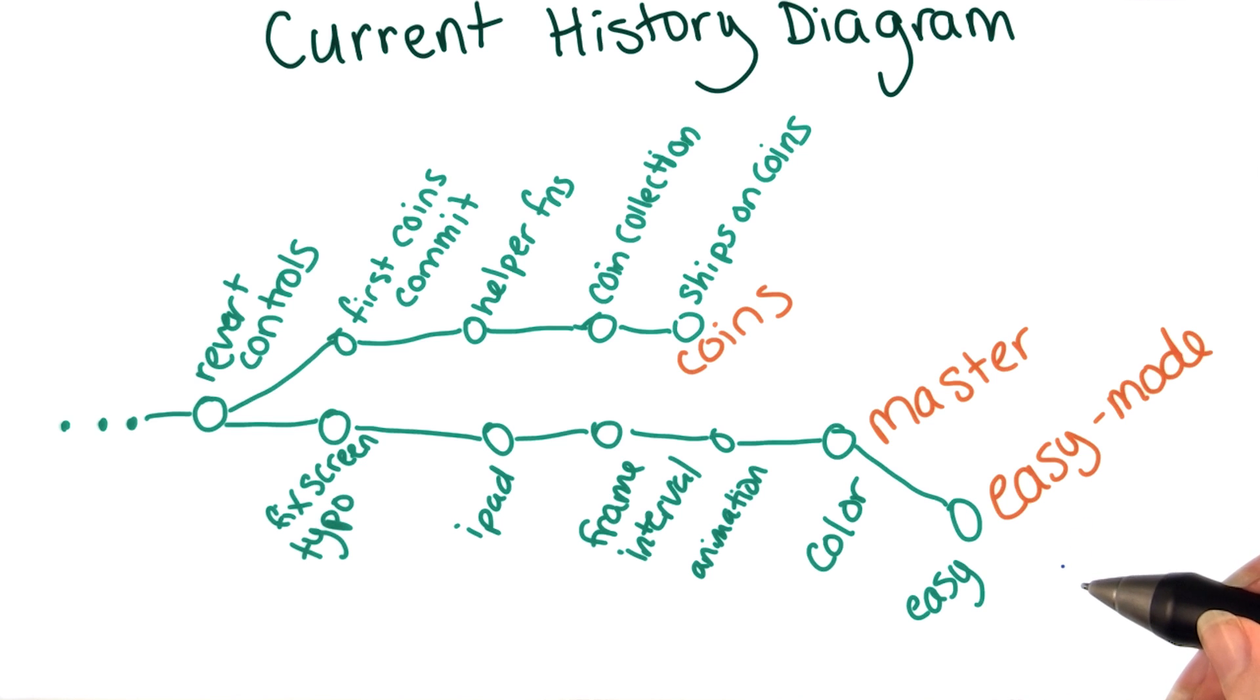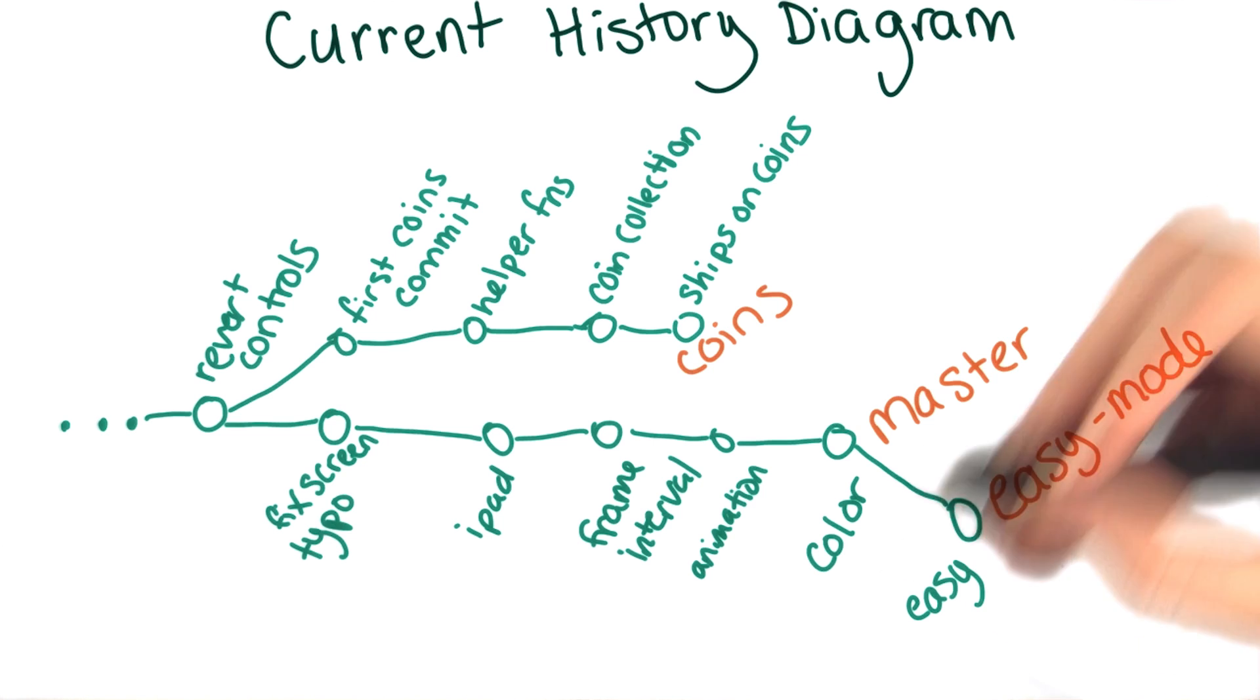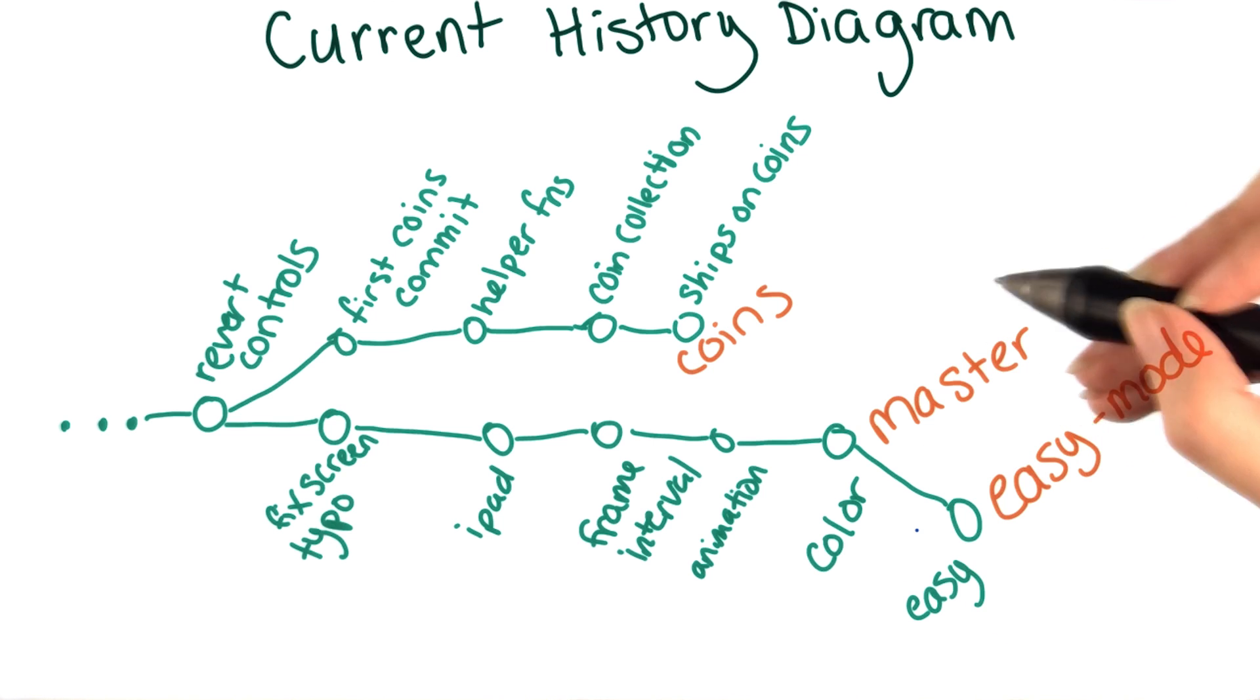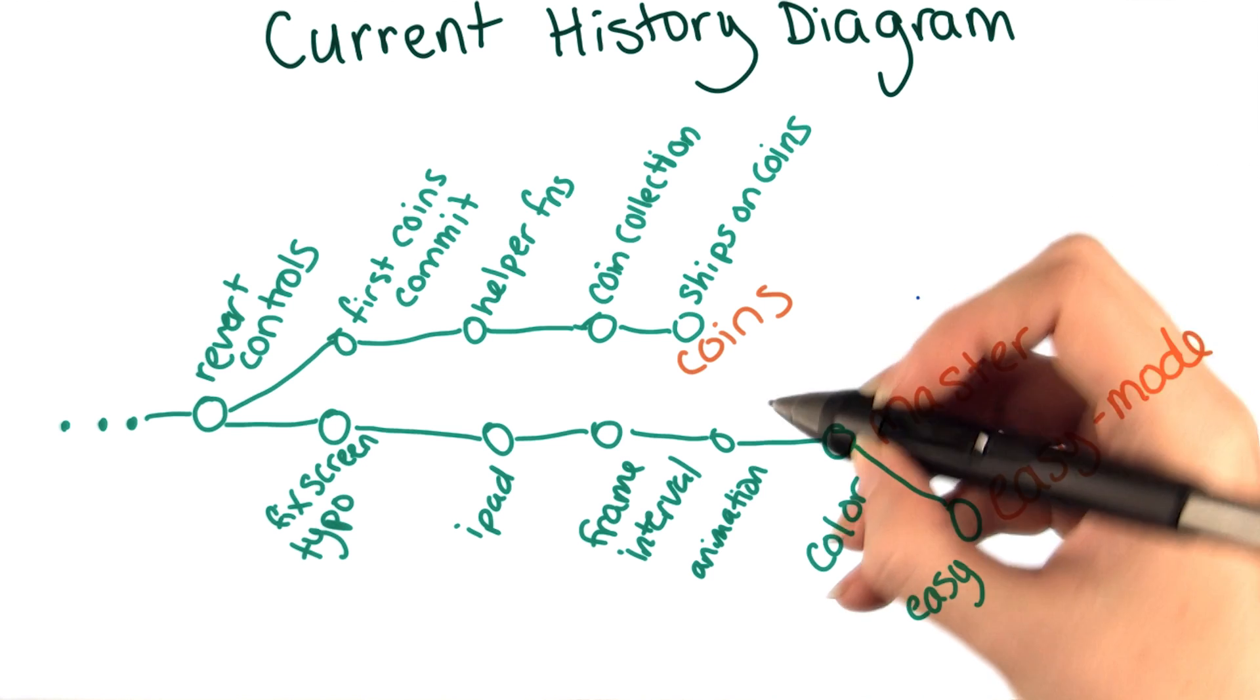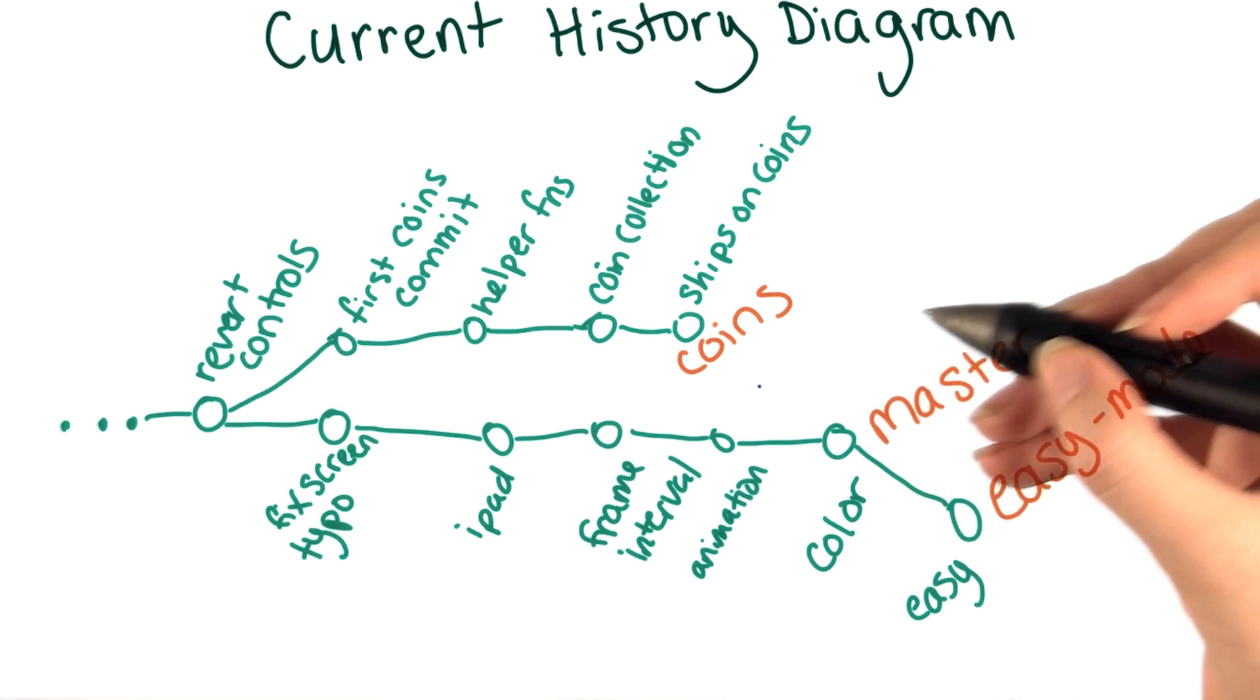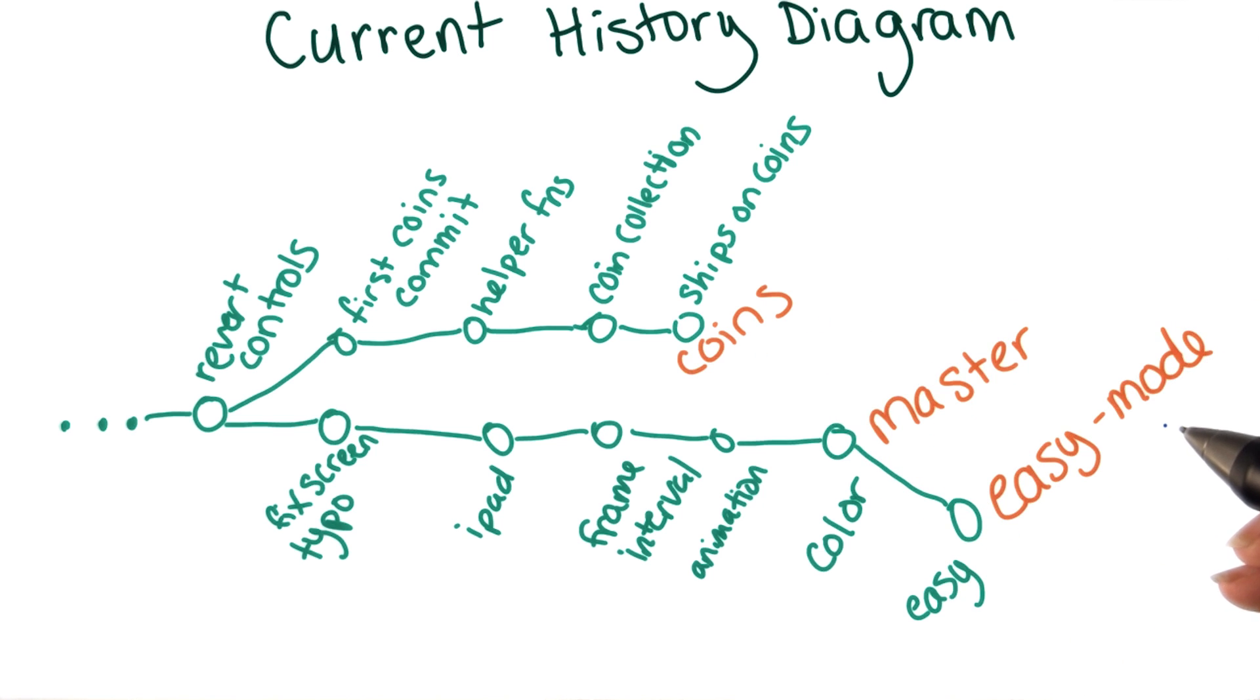It turns out that each commit knows about its parent. That is, it stores a reference to the commit that was checked out when it was made. If you were on a branch when you made the commit, it still just stores the commit ID of what was then the tip of the branch. The commit doesn't care anything about branch names. Only the branches themselves store anything about the position of the branches.